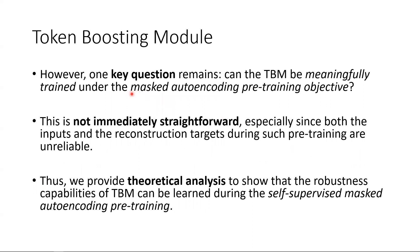However, one key question remains: can the TBM be meaningfully trained under the masked autoencoder pre-training objective? This is not immediately straightforward, especially since both the inputs and the reconstruction targets during such pre-training are unreliable. Thus, we provide theoretical analysis to show that the robustness capabilities of TBM can be learned during the self-supervised masked autoencoder pre-training. Please see the paper for more details.